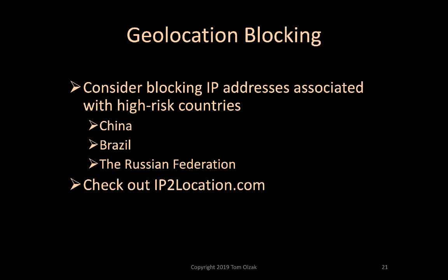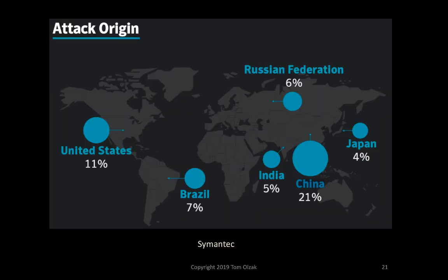If an organization does not do business with high-risk countries or regions, it should consider blocking those locations. A good start is blocking IP address ranges associated with China, Brazil, and the Russian Federation. IP2Location provides IP addresses by country, both for viewing and for download. This is a graphic from Symantec that shows the top geographic sources for cyber attacks.